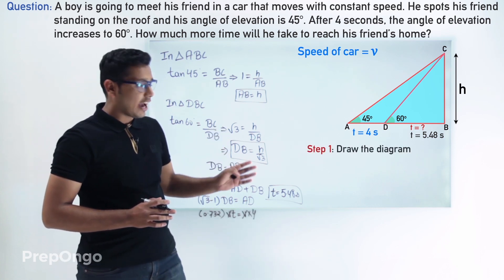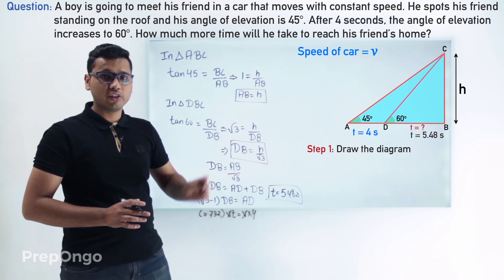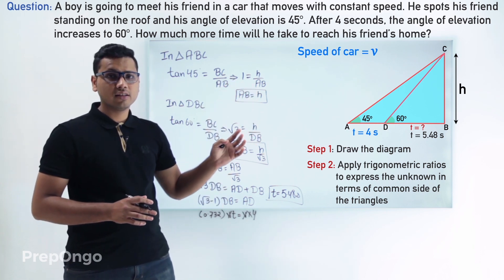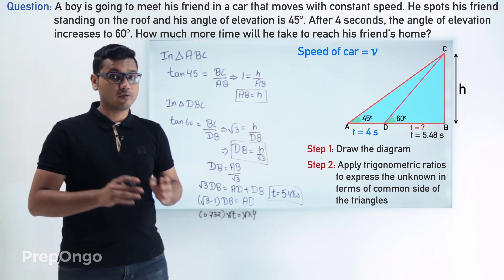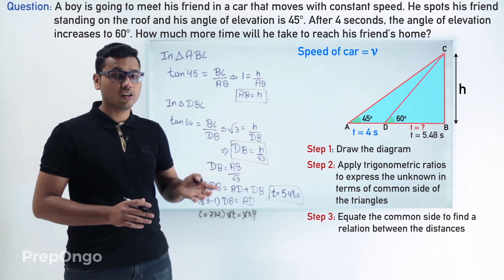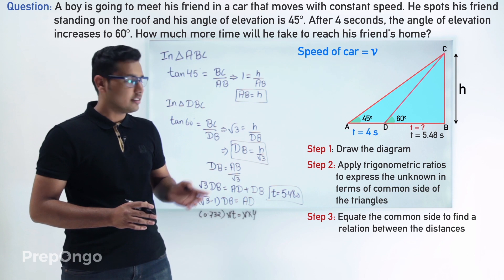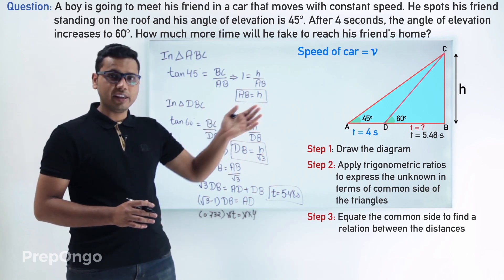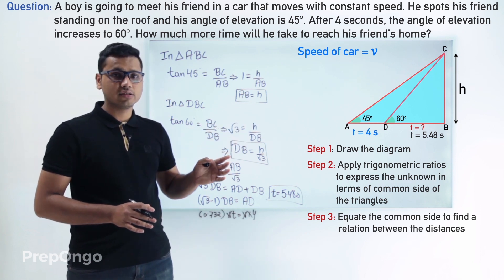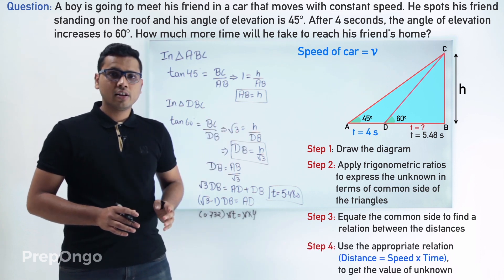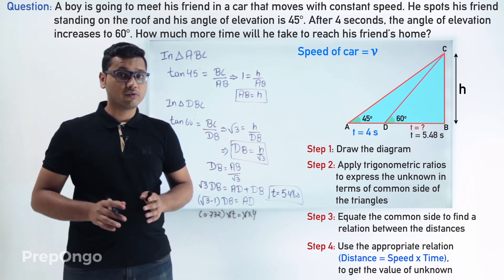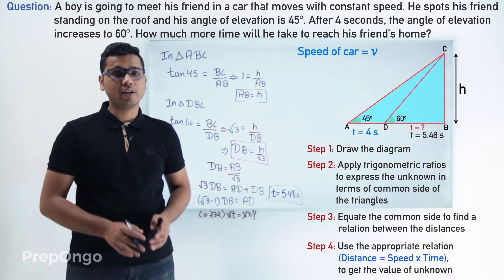To summarize: first, we drew a diagram for proper visualization. Then we applied trigonometric ratios to find the common side length H in terms of the base lengths of both triangles. Next, we found a relation between lengths AD and DB. Finally, using distance equals speed multiplied by time, we solved to get the final answer of 5.48 seconds.